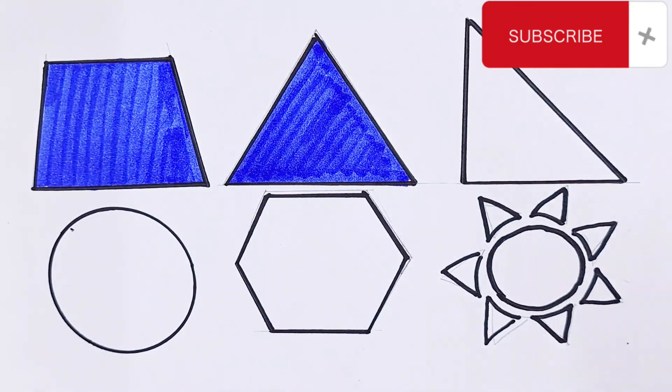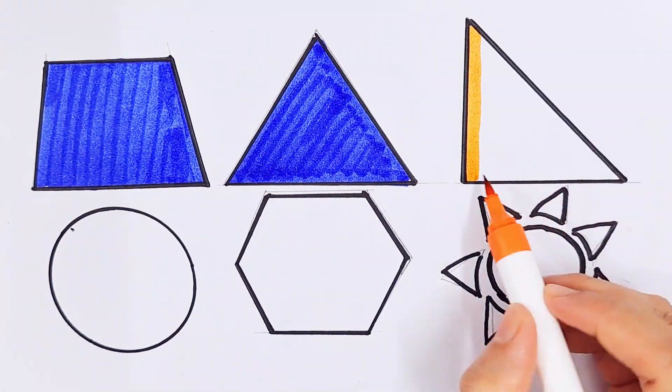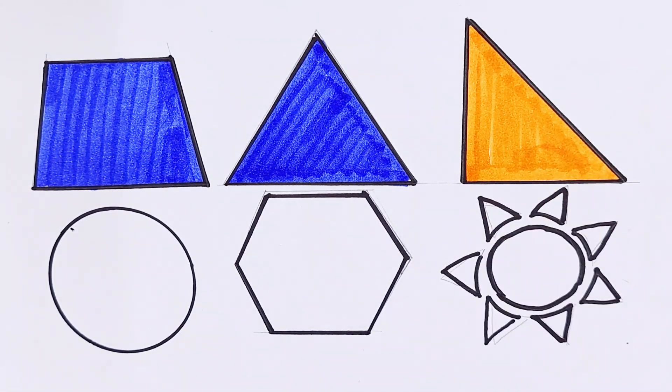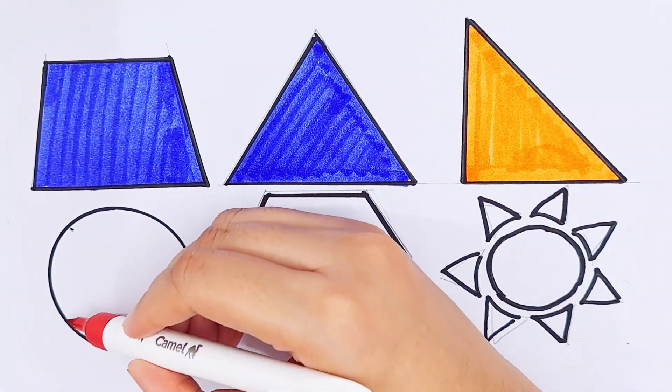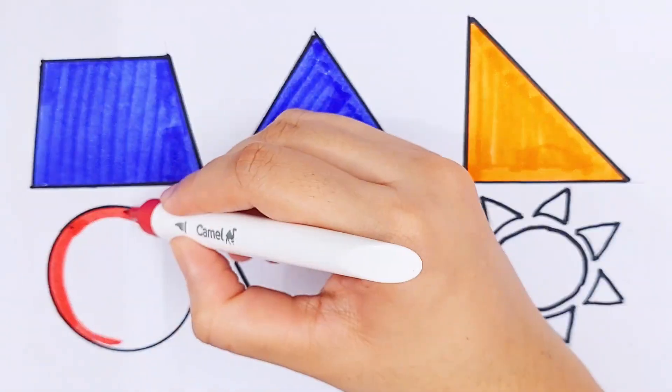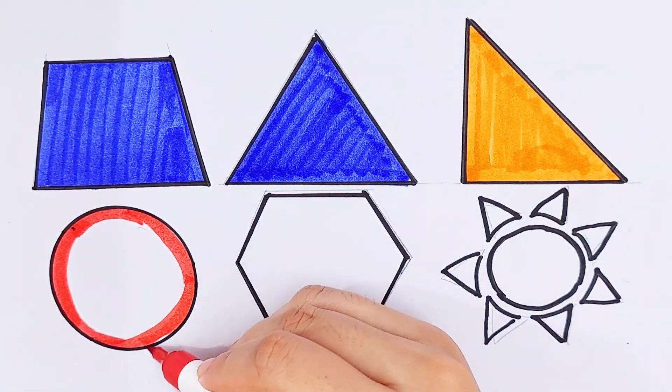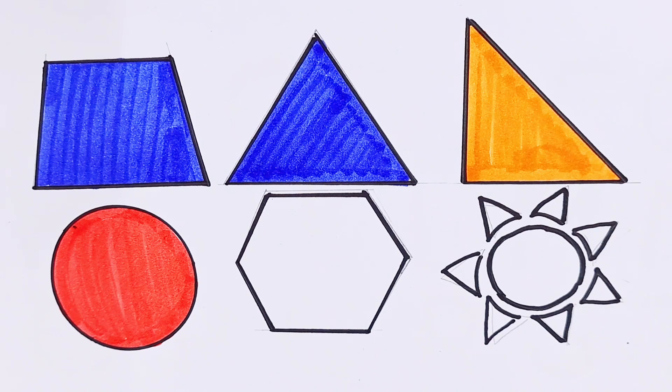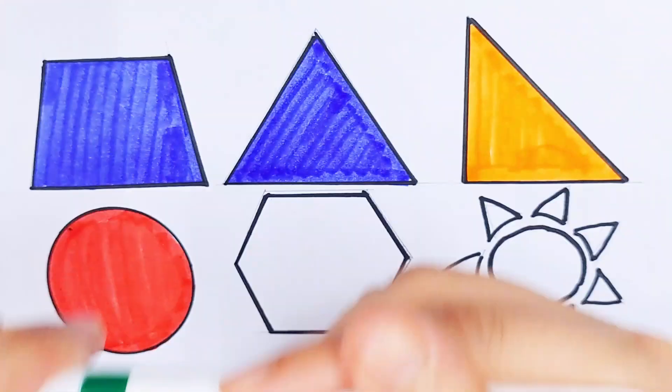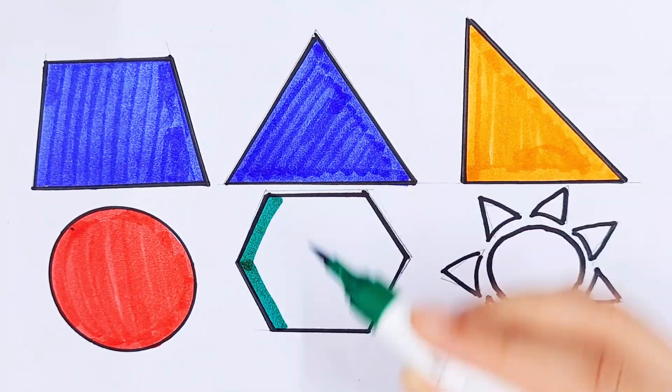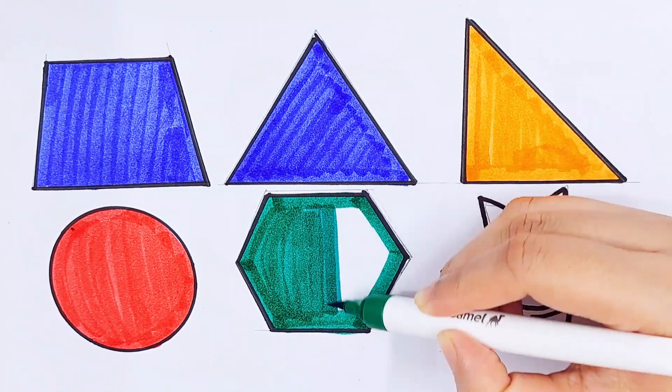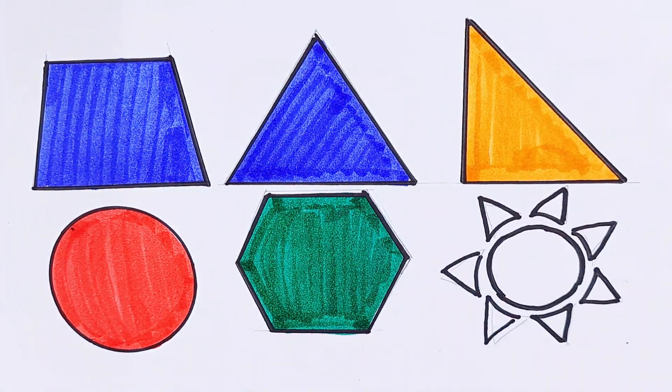Triangle, orange color. Right triangle, red color. Circle, dark green color. Hexagon.